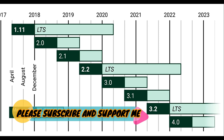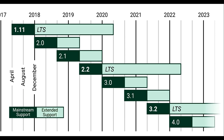Django 3.0 is stable. Next in 2022 is Django 4.0. Django is open source. We can complete the Django packages.